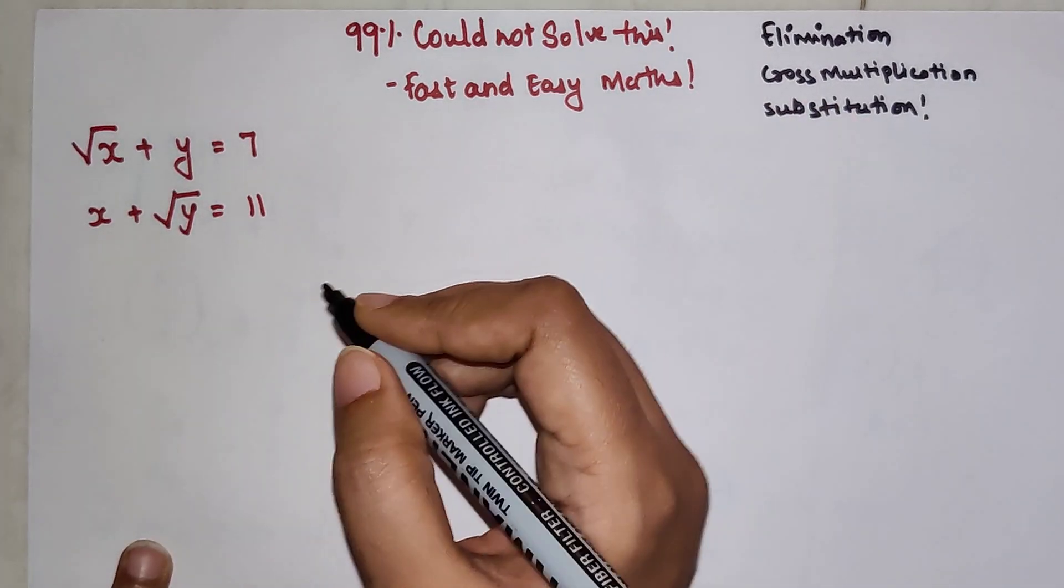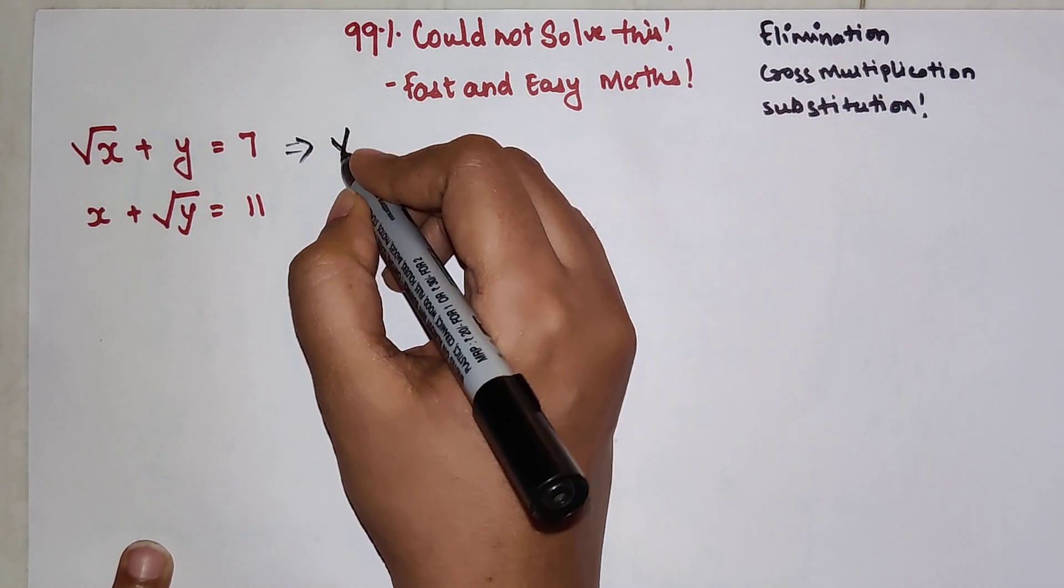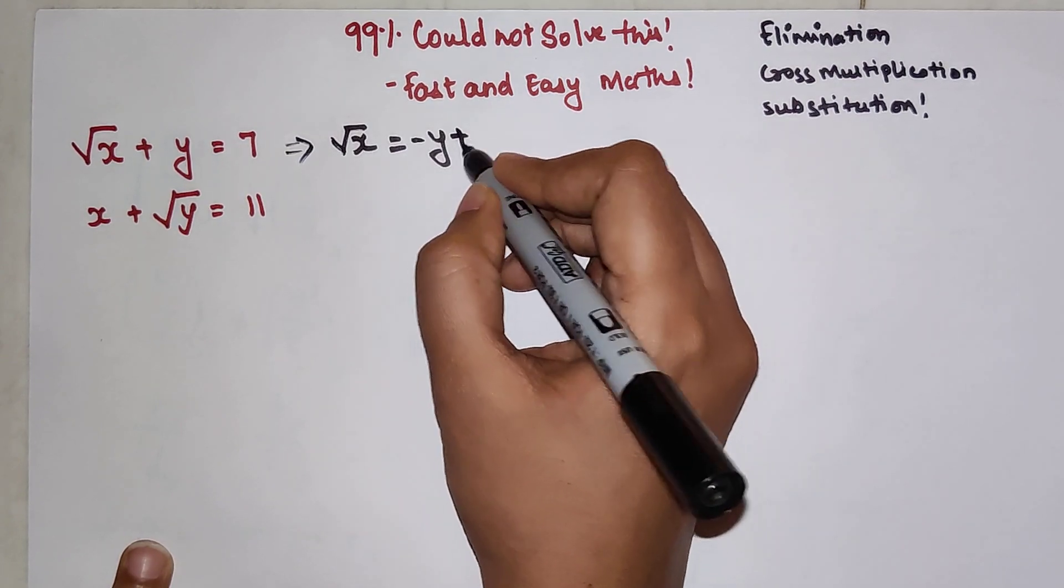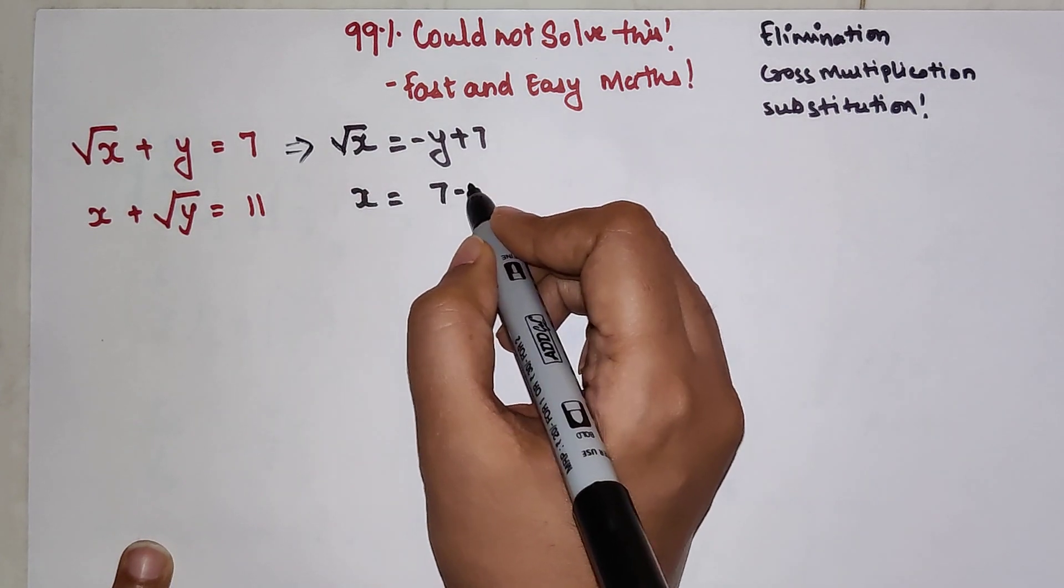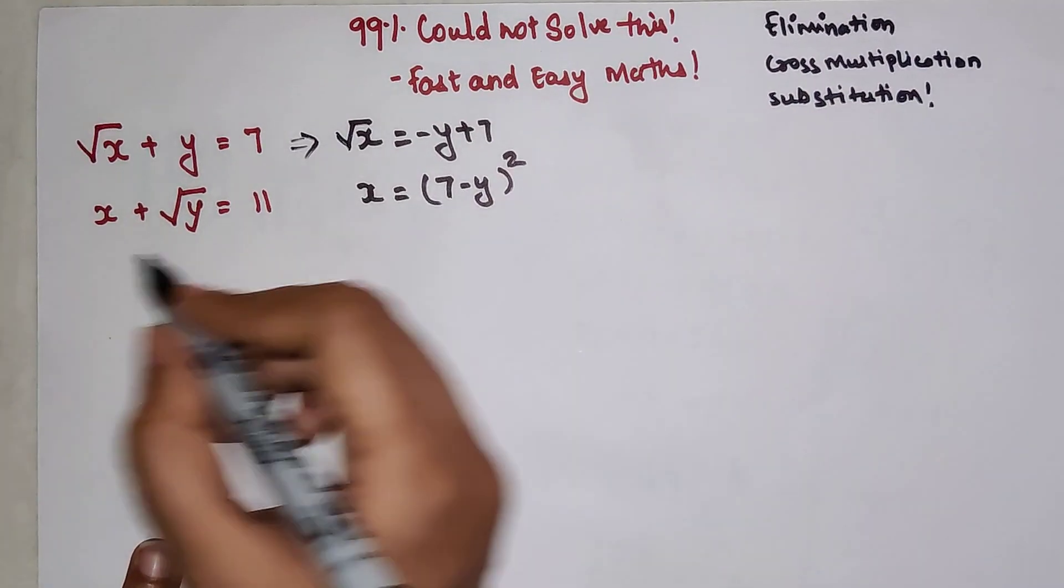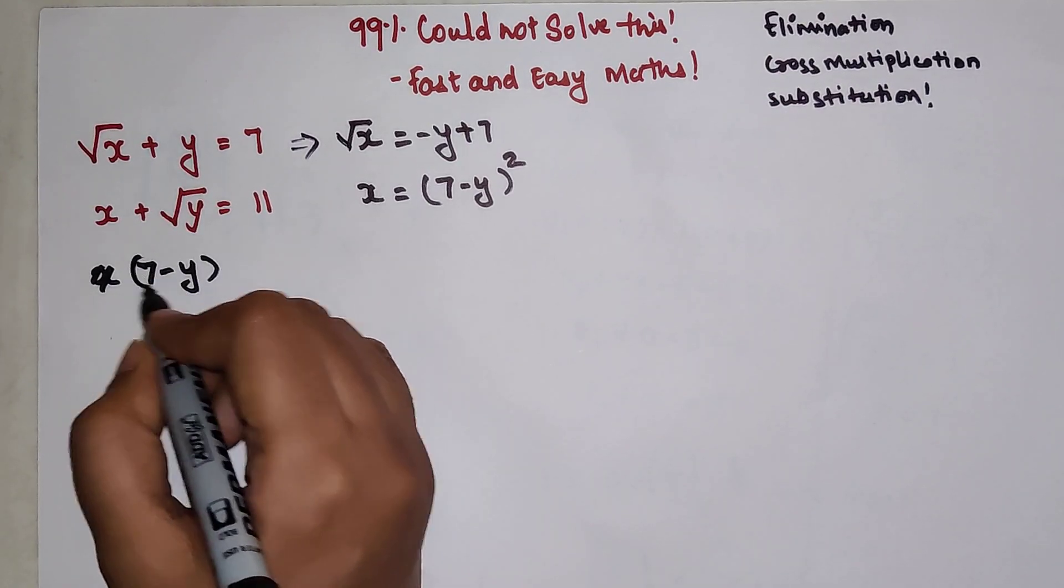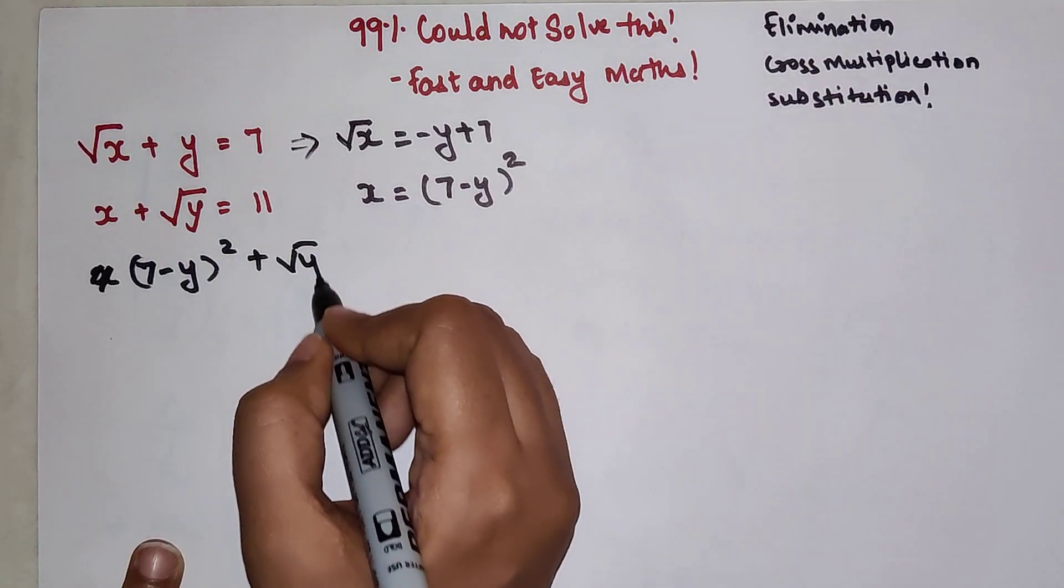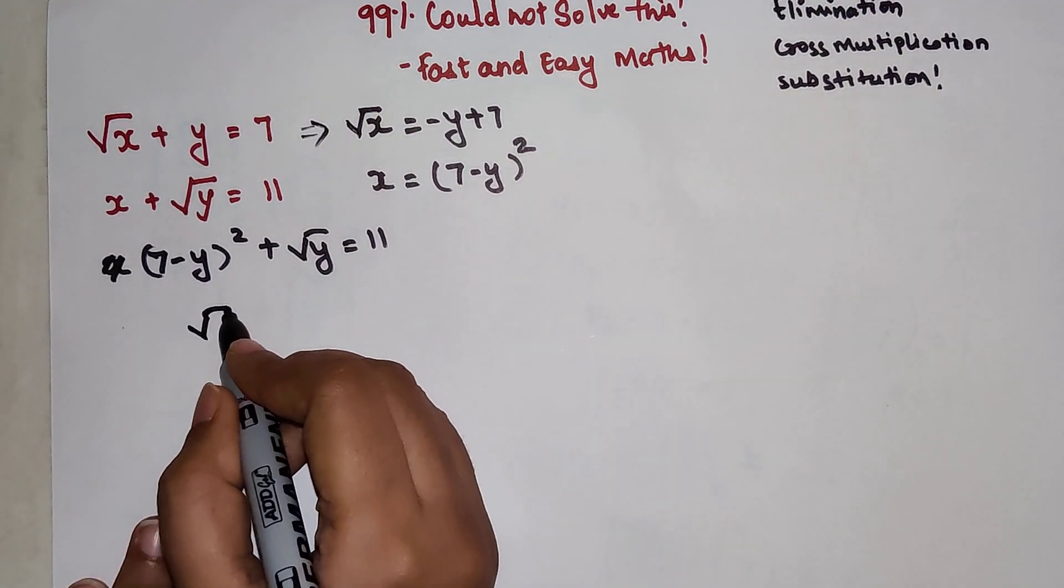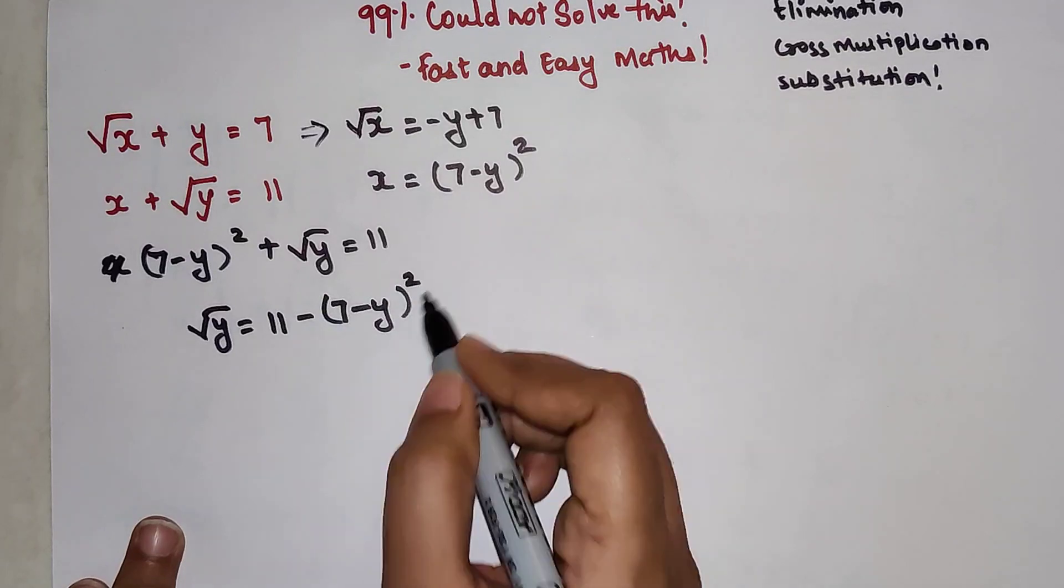Let's try the method of substitution. I can write from here that root of x equals minus y plus 7. So x equals 7 minus y the whole square. Substituting this, I can say that 7 minus y the whole square plus root y equals 11.